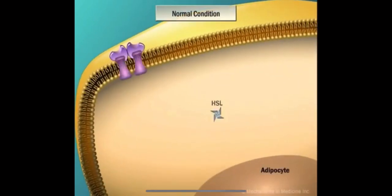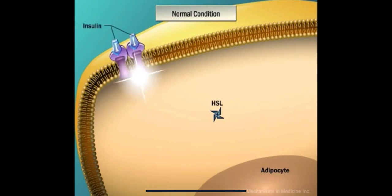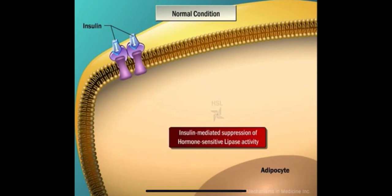Hormone-sensitive lipase is an intracellular lipase, or enzyme, that is capable of hydrolyzing lipids such as triglycerides. Located on the cell membrane are specific receptors for the hormone insulin. Under normal circumstances, when insulin binds to the insulin receptor, this triggers intracellular signals that suppress the activity of hormone-sensitive lipase.